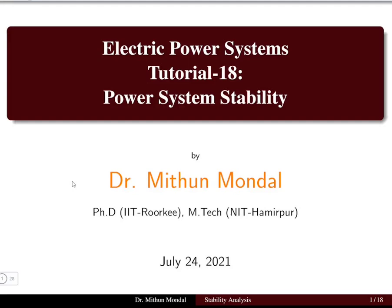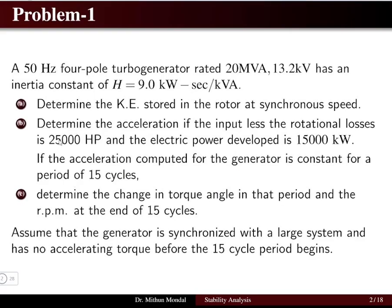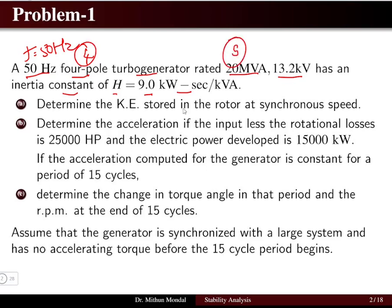Welcome to the next tutorial in power system stability — this is the second part. The first problem: a 50 Hz, four-pole turbo generator rated at 20 MVA, 13.2 kV has an inertia constant H of 9 kilowatt-second per kVA. We have to determine the kinetic energy stored in the rotor at synchronous speed.